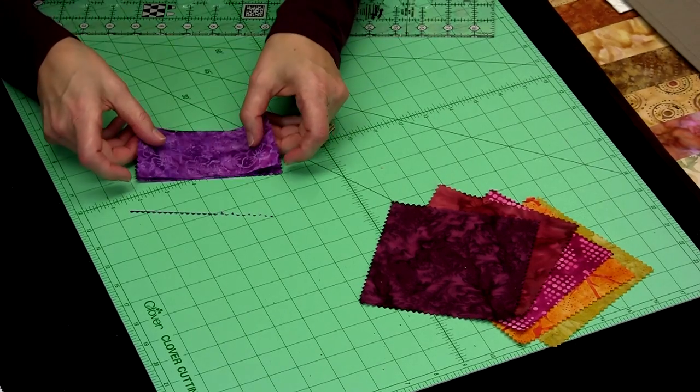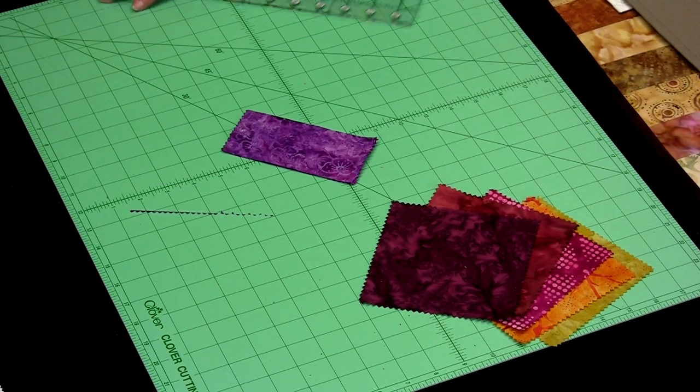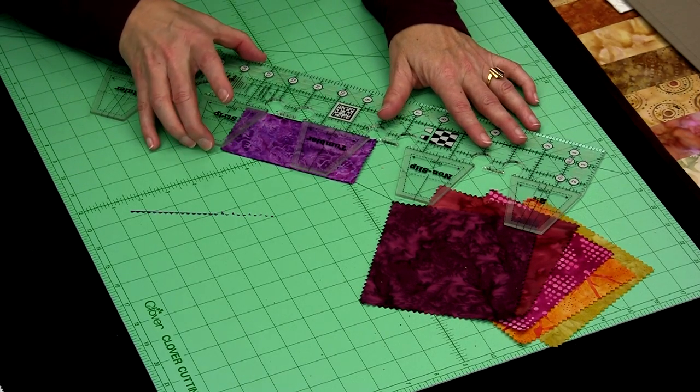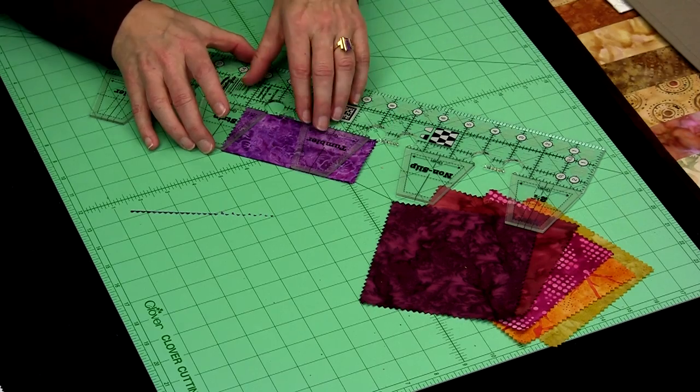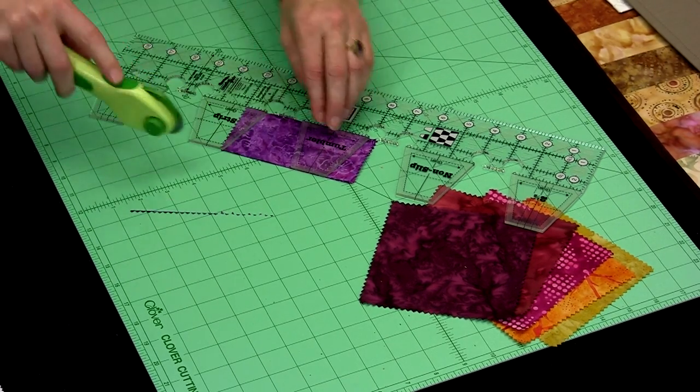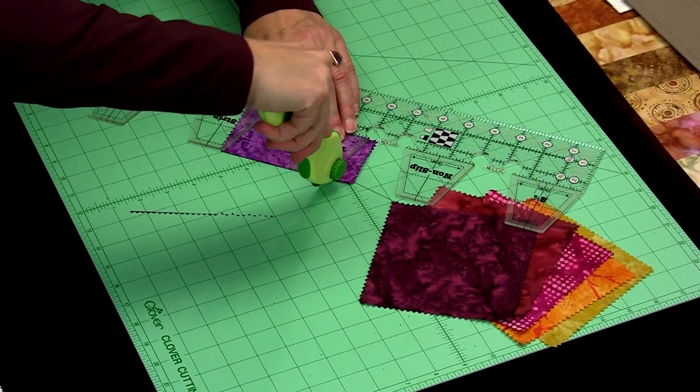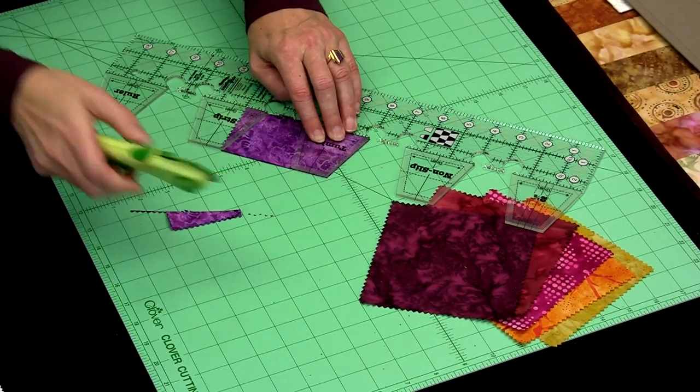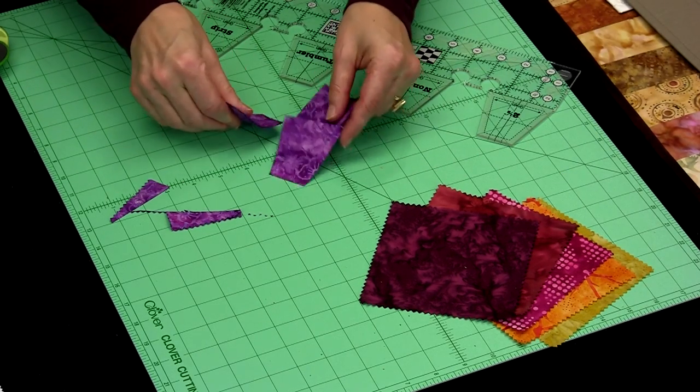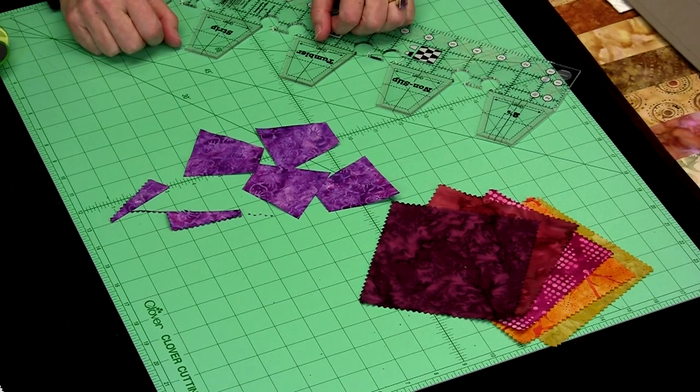Now we can stack these two up, turn the ruler around, and I'll be able to cut that 5 inch charm square into 4 little tumblers. And back, and over again. Again, with very little waste, I've cut my pieces ready for my project.